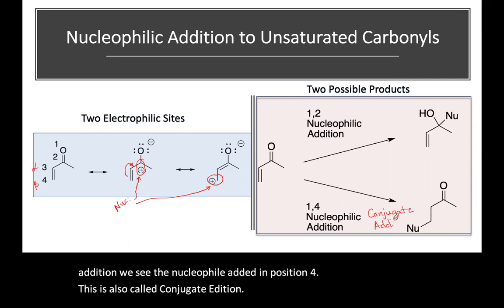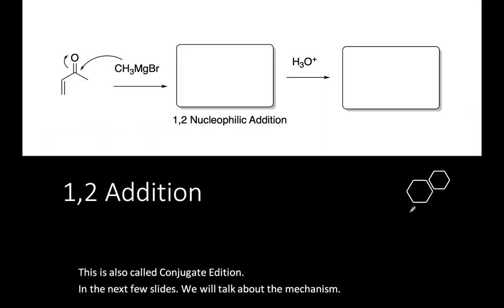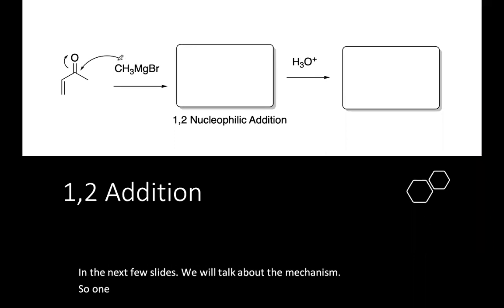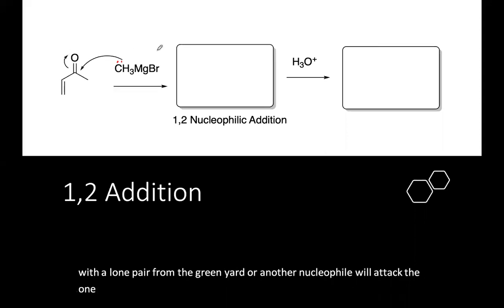In the next few slides, we're going to talk about the mechanism. So 1,2 is similar to what you've probably already seen, where the carbon with the lone pair from the Grignard or another nucleophile will attack the 1,2 position and break the pi bond, forming the tertiary alkoxide.